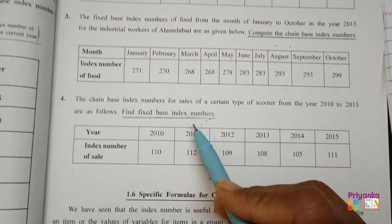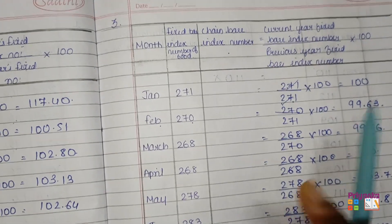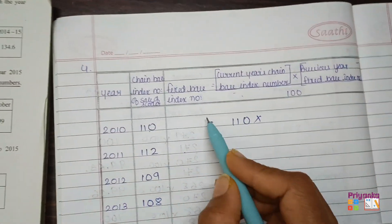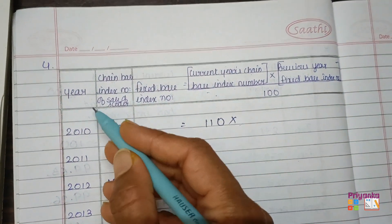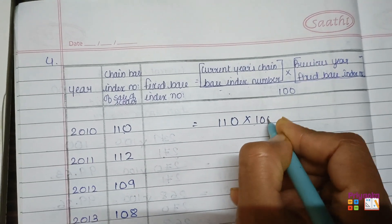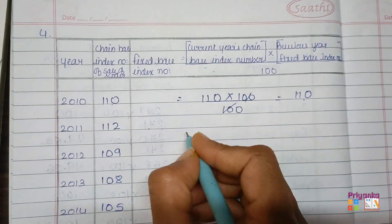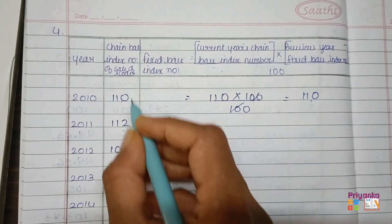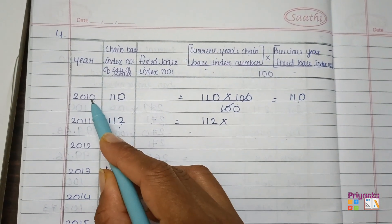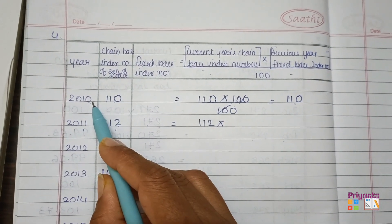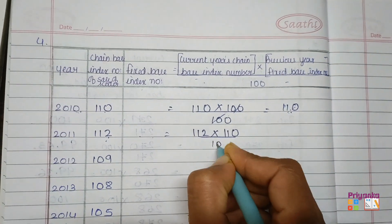For question 4, there is a fixed base index number given, so we don't need to repeat the number as done in question 3 — that was only for chain base index number when no base is given. Here in fixed base index number, we continue the previous process: the previous year fixed base is not given, so we assume it as 100. Dividing by 100, the 100 cancels and the answer is 110. For 2011, the current year chain base index number is 112, multiplied by the previous year fixed base 110, divided by 100 — giving 123.20.